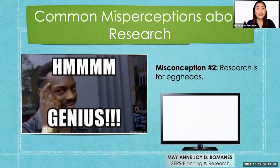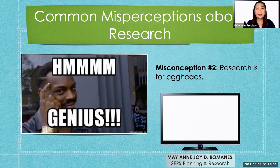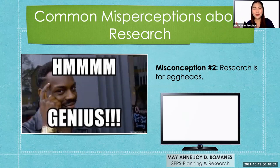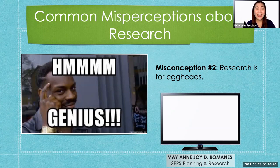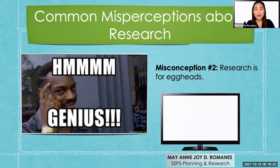The second misconception: research is for eggheads — meaning geniuses, extraordinarily smart people. In pop culture, researchers are portrayed as villains who want to take over the world, or absent-minded geniuses doing technical tasks that ordinary people can't understand. So some say research is for geniuses only. But that is not true. In reality, everyone can be a researcher.